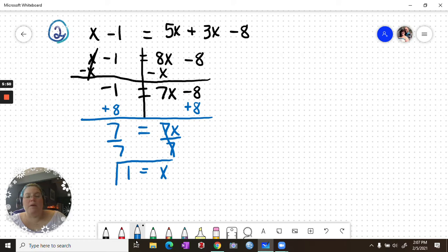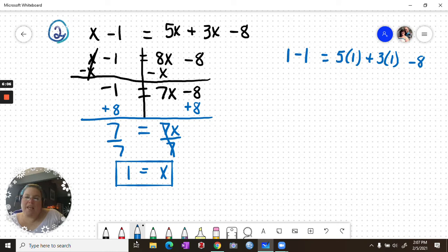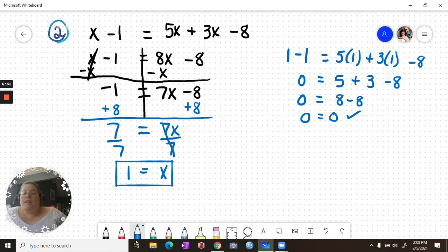And again, I can check my work by going back to the original. If I do 1 minus 1 equals 5 times 1 plus 3 times 1 minus 8, we get 1 minus 1 is 0. 5 times 1 is 5, 3 times 1 is 3 minus 8. 0 equals 8 minus 8. 0 equals 0. Our solution works. Again, take a moment and pause if you need to write this example down.